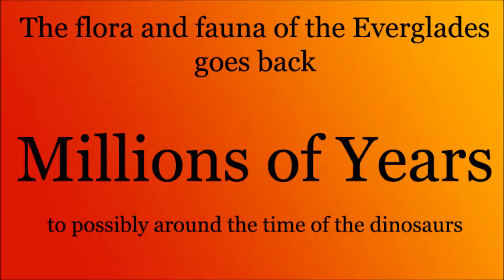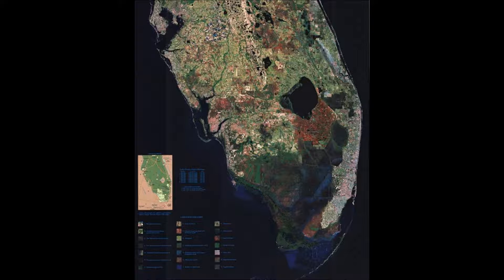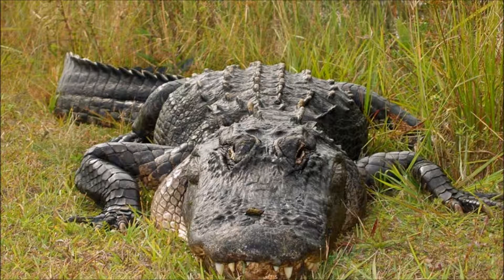The plants and animals we see nowadays have been in the Everglades long before the Everglades was actually recognized as the area we see today, and have been adapting to every change the Everglades makes. The flora and fauna of the Everglades goes millions of years back in time, possibly around the time of the dinosaurs. When the Florida Peninsula first joined the continent of North America hundreds of millions of years ago, it did not have plants or animals on it. In a million years, enough flora and fauna had gathered there to match the current numbers.